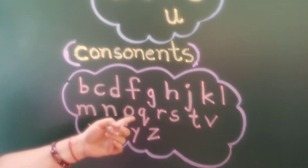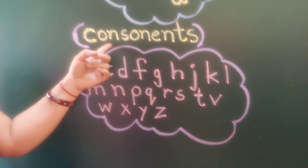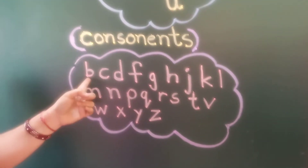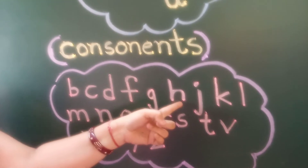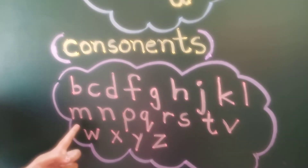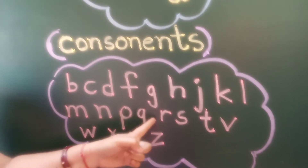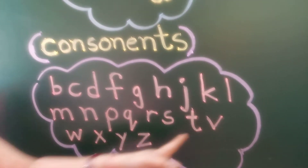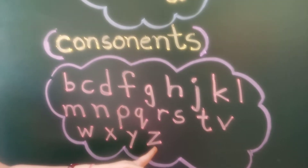And the rest letters are called consonants: B, C, D, F, G, H, J, K, L, M, N, P, Q, R, S, T, V, W, X, Y, and Z.